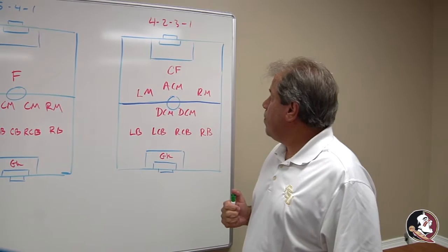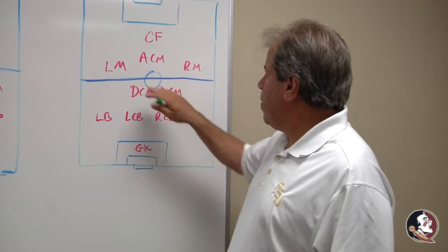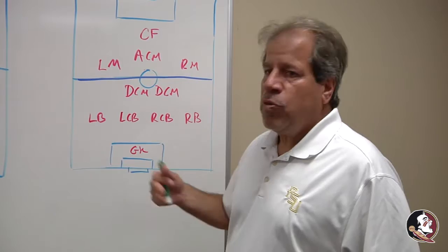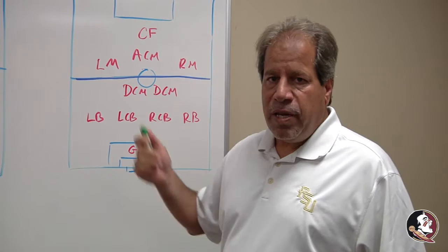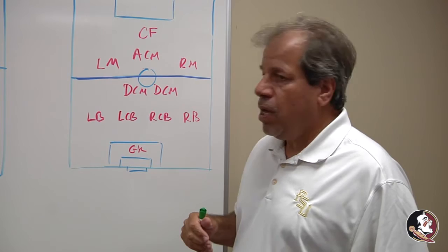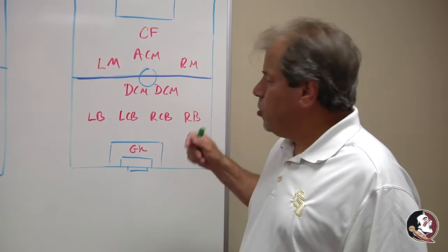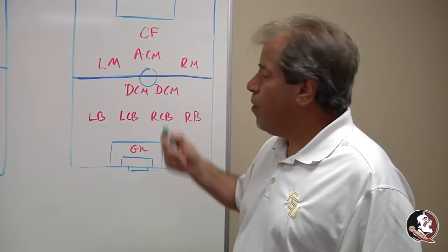Here you have the 4-2-3-1. You can see four players along the back line, two defensive midfield players, three midfielders across here, and a striker up top. This is a really flexible and versatile system. Sometimes you can invert one of the defending midfield players and in essence create a 4-1-4-1. Here at Florida State we've played some 4-2-3-1 and some 4-1-4-1. We think that it gives us a lot of versatility in our attack, and geometry is important in soccer — it gives an awful lot of different angles and triangles. So this is also a very popular shape throughout the college game.